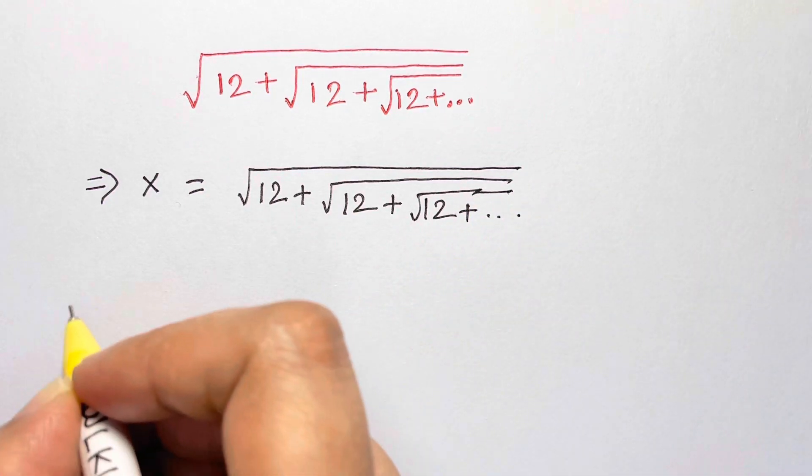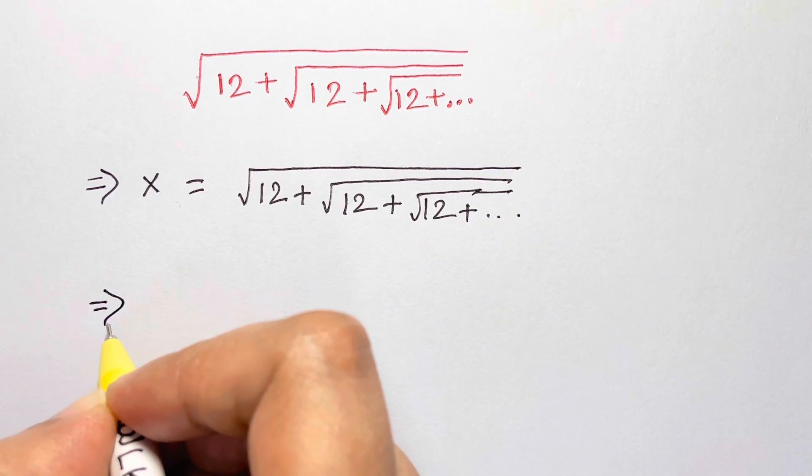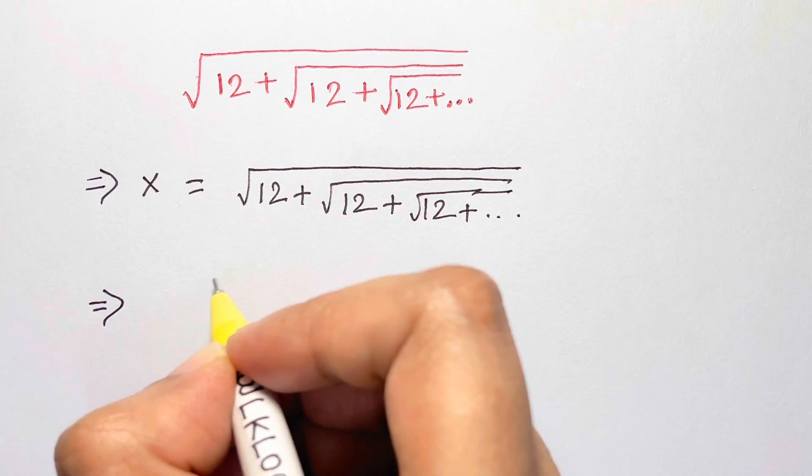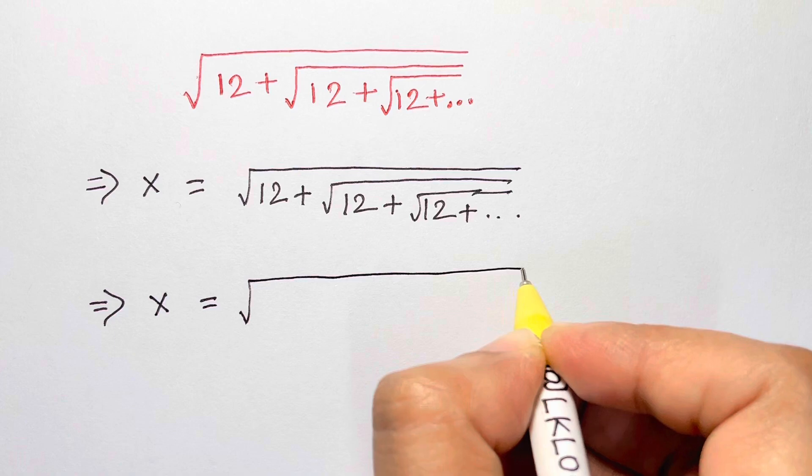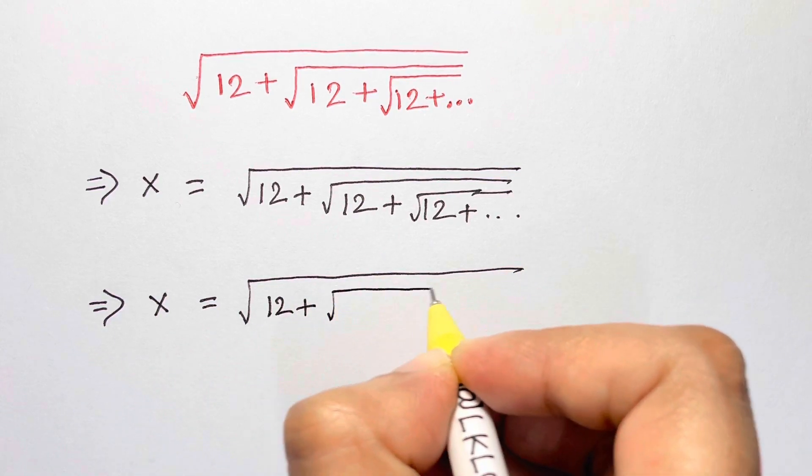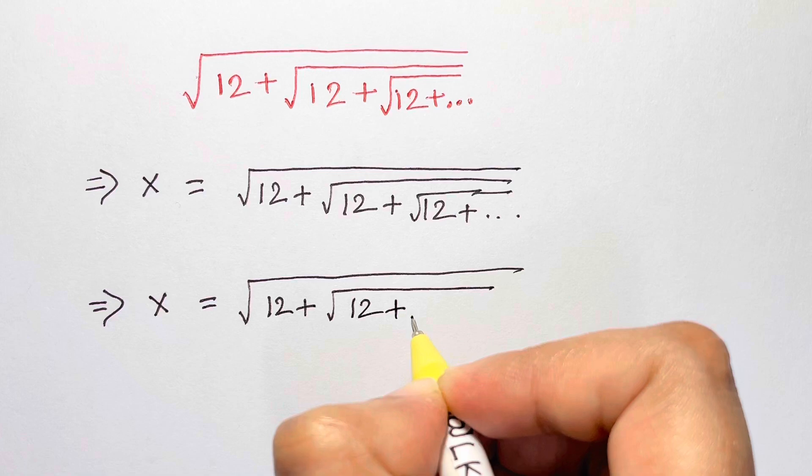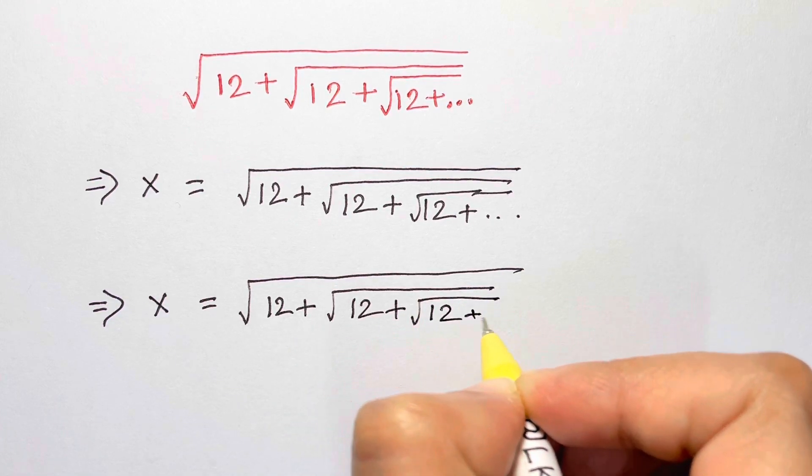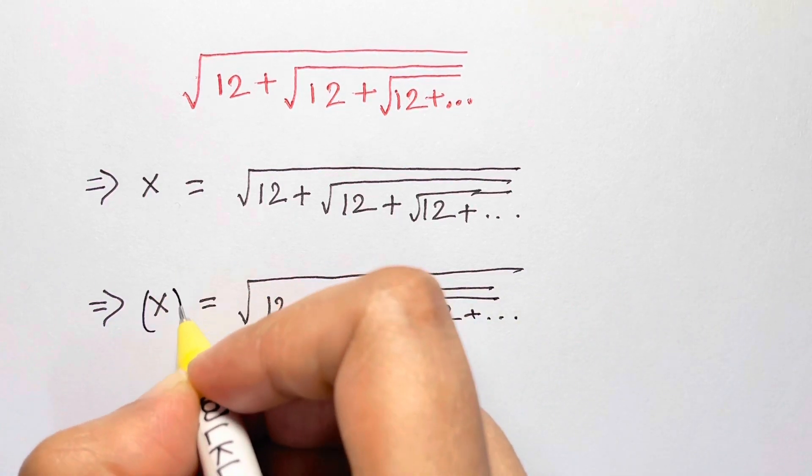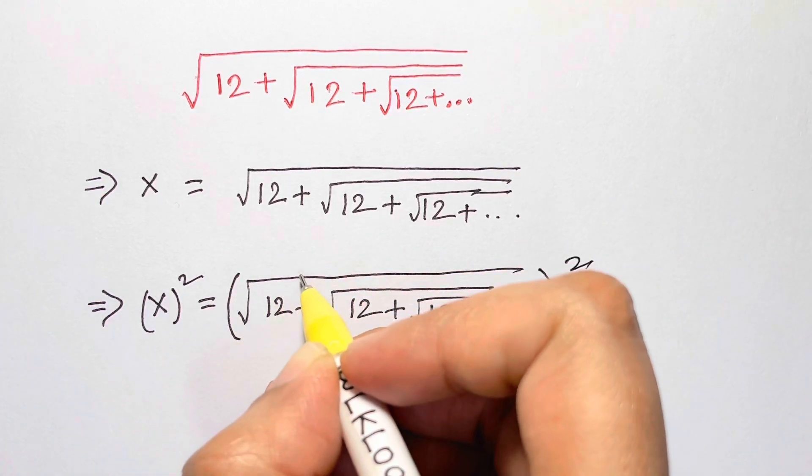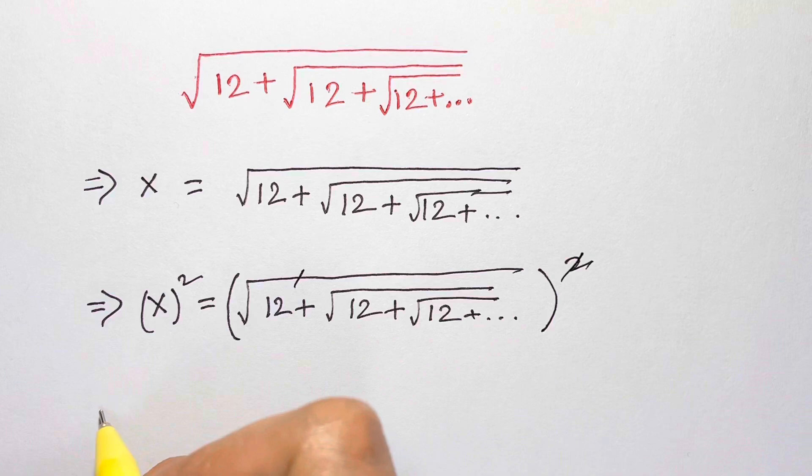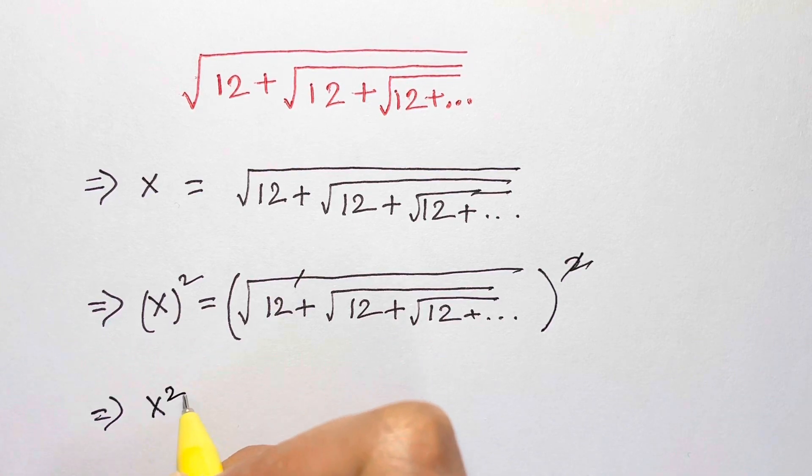Now the second step would be squaring both sides. So when we square both sides, this root and square gets cancelled. Here we have x squared is equal to 12 plus square root of 12 plus square root of 12 and so on.